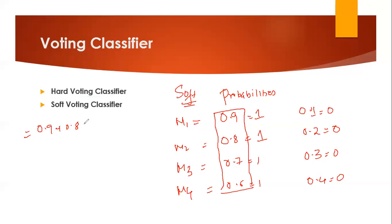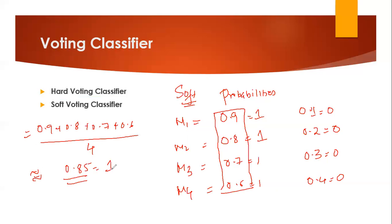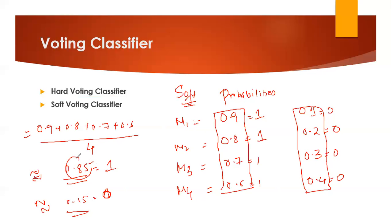The average is nothing but 0.9 plus 0.8 plus 0.7 plus 0.6 divided by 4, which gives you somewhere around 0.75 approximately. So around 0.75 probability it says that this particular model is giving us class 1. Similarly, the mean for class 0 will be around 0.25. Here we can directly see that 0.75 is greater than 0.25, so this probability will be selected — meaning class 1 is the output selected for that test data, and that is how a soft voting classifier works.